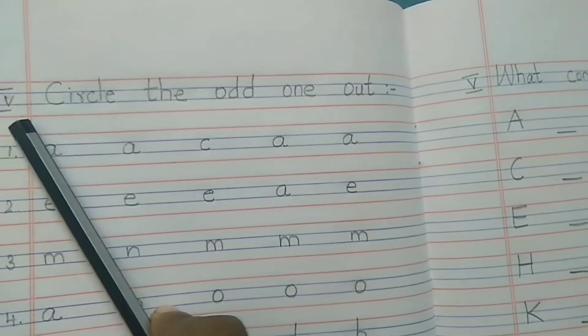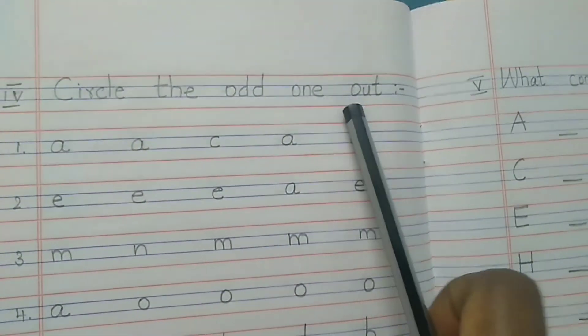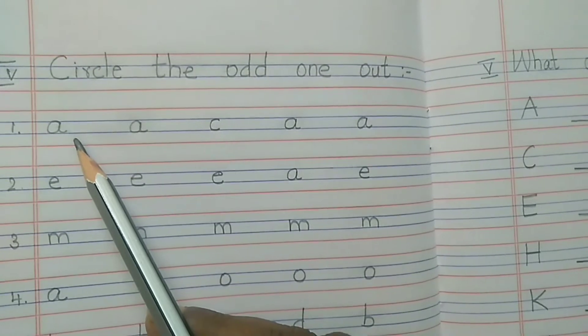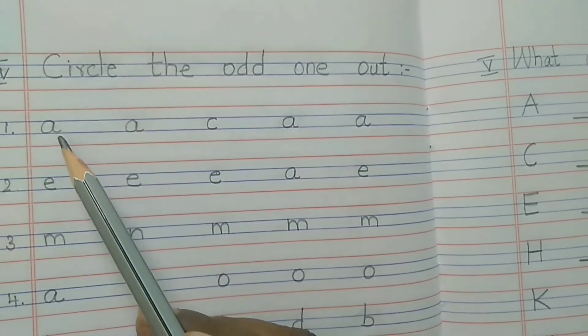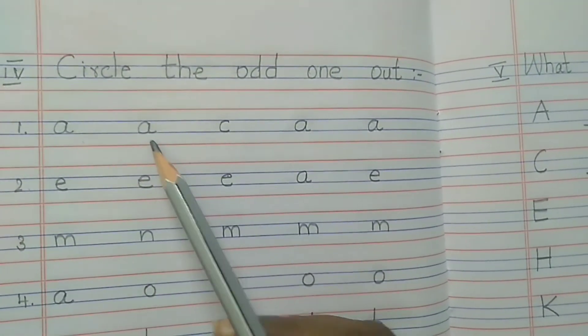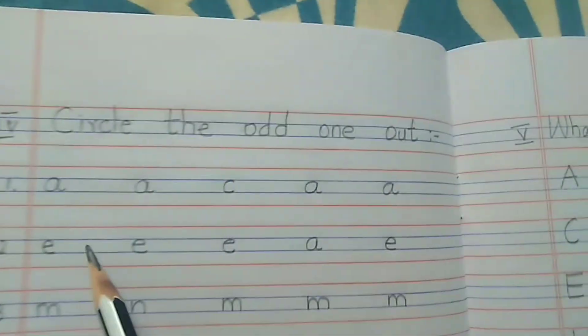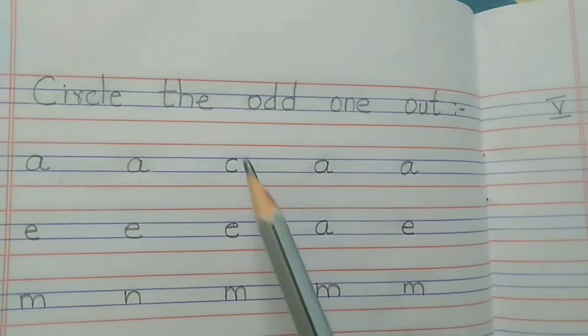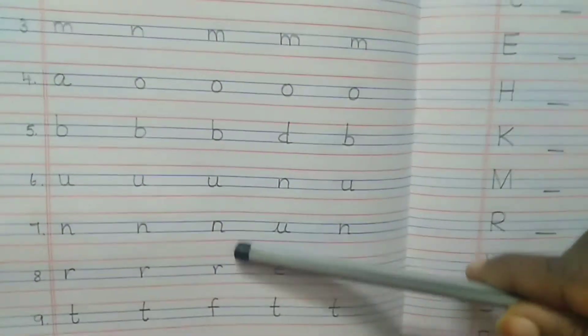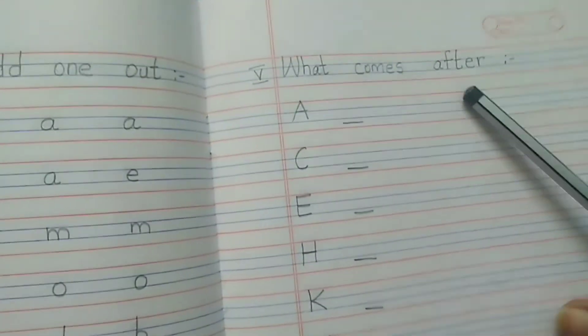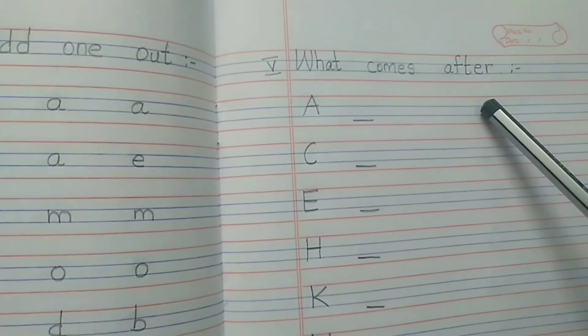Fourth main, circle the odd one out. Here you can see small alphabets - A, A, C, A, A. Read aloud, find the odd one and circle it. I think you understood, so finish this and then go to the next main. What comes after.